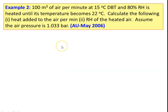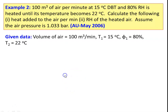Example 2: 100 m³ of air per minute at 15°C dry bulb temperature and 80% relative humidity is heated until its temperature becomes 22°C. This is a sensible heating process. Calculate: (1) heat added to the air per minute, and (2) relative humidity of the heated air. Assume air pressure is 1.0331 bar. Given data: volume = 100 m³/min, T1 = 15°C, φ1 = 80%, T2 = 22°C.